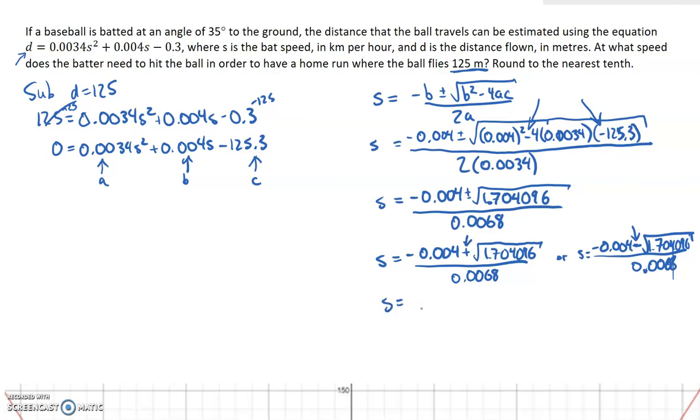And so the first one, when I type that in my calculator, and you can do this to check as well, I get 191.4, because it says the nearest tenth up above. So make sure we put it in that. And we're also told that s is the bat speed in kilometers per hour. The second solution it gives me is negative 192.6 kilometers per hour.